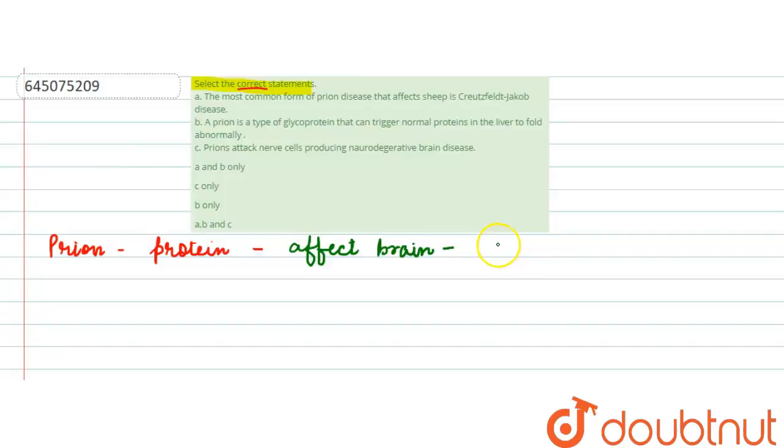The most common form of prion disease that affects humans is Creutzfeldt-Jakob disease, which is also known as CJD. Now, Creutzfeldt-Jakob disease is usually found in humans in the age group between 55 to 65. In rare cases, it can also occur in people who are below 55 or more than 90.